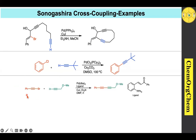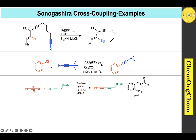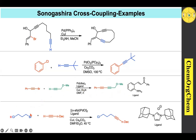Example 10: Up to now we have seen sp2–sp cross-coupling. Here is an sp–sp cross-coupling example, which is also feasible but requires a proper ligand. A phosphine-olefin ligand is used here to effectively catalyze the coupling of two sp carbons to produce the corresponding diyne product.